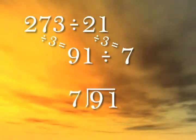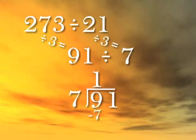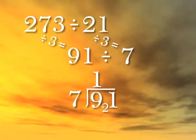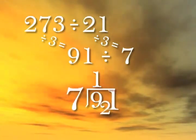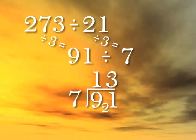7 divides into 9 one time with a remainder of 2. Prepend the 2 to the next digit, 1, and you get 21. 7 divides into 21 three times, so the answer is 13.